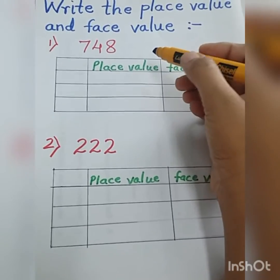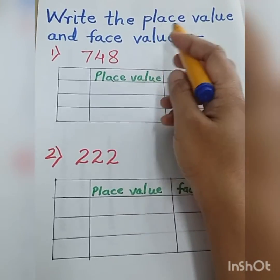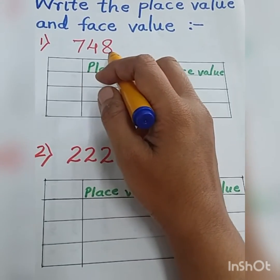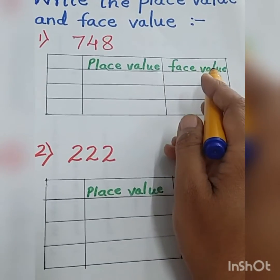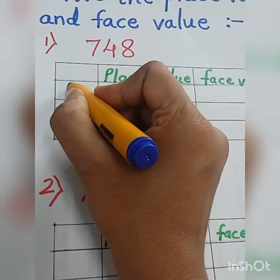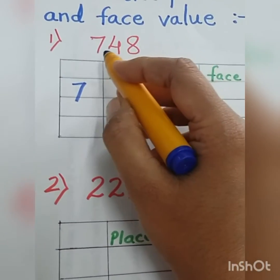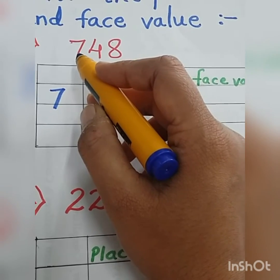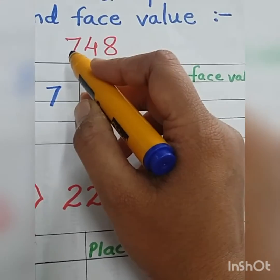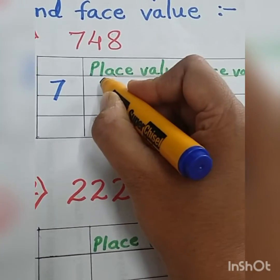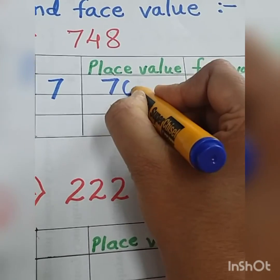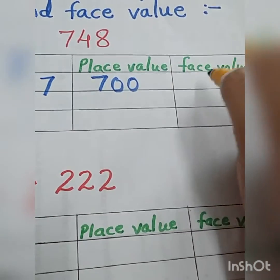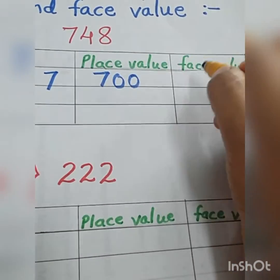Now students, let us solve one exercise — write the place value and face value of each digit. I have taken number 748. First I will take 7. Now 7 is at hundreds place — ones place, tens place, hundreds place — so the place value of 7 is 700. Now what about the face value? The number itself, so the face value of number 7 is 7.